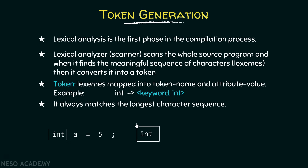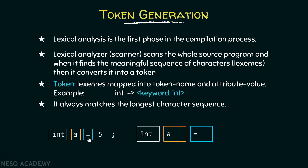From now on, think of tokens as containers that hold information about lexemes. After the blank space, the lexical analyzer finds character 'a', and after that there is no further character, so it stops and generates a separate token for 'a' as an identifier or variable name. After the next blank space, it finds the equal-to operator and generates a separate token for that, containing the information that this is an assignment operator.